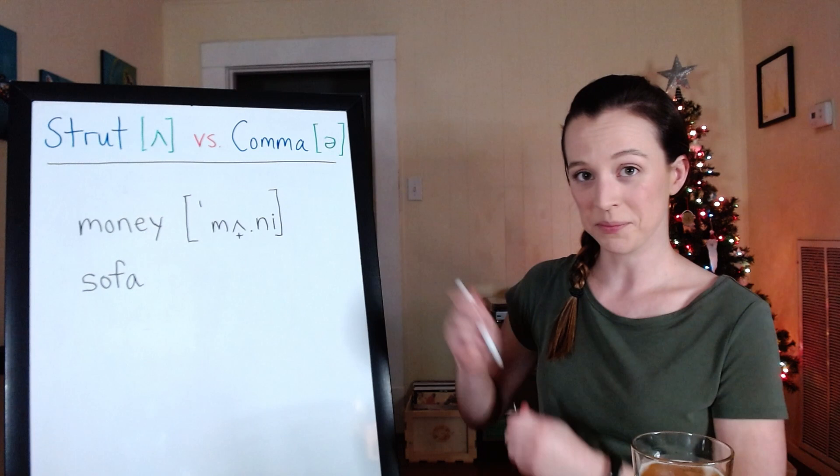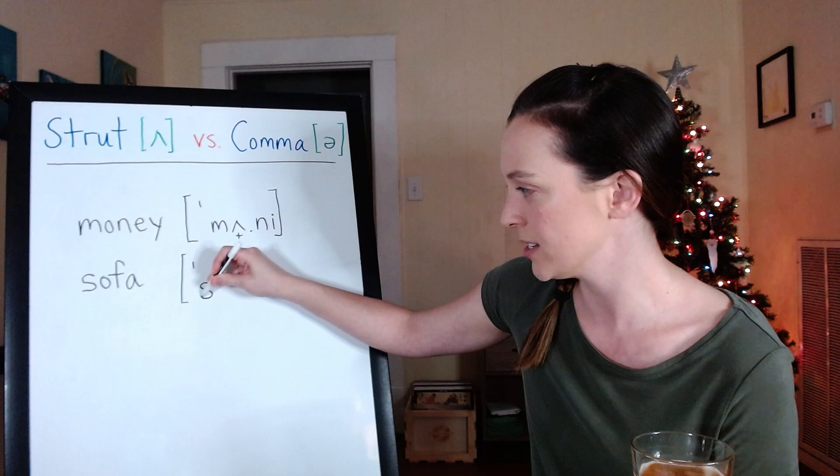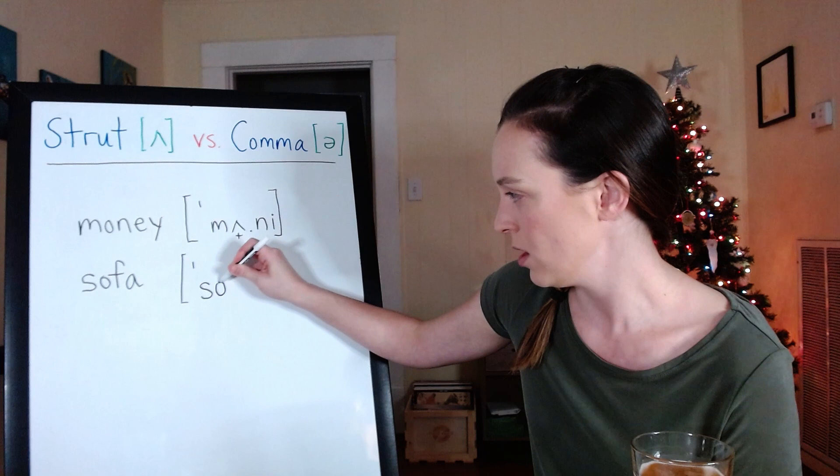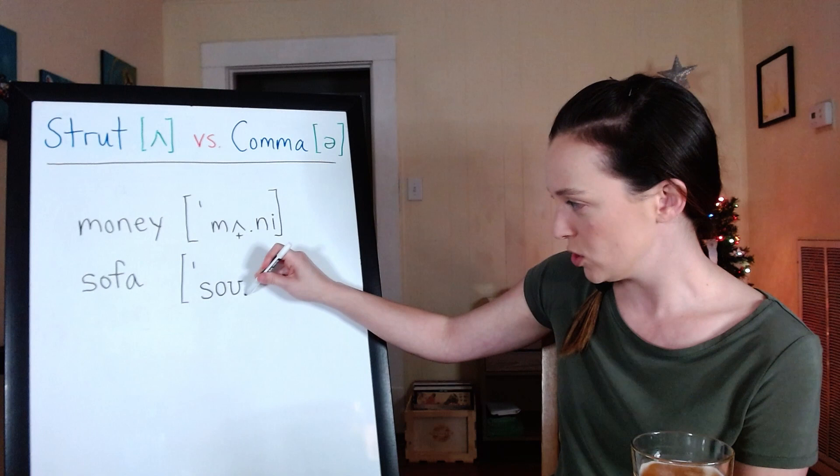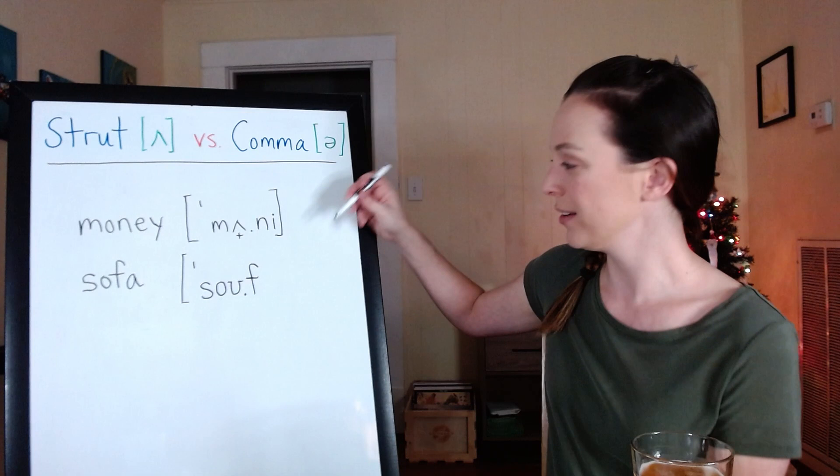So it looks like this. Again, our stress mark because the first syllable's stressed, right? Our sss, o, the o diphthong. So we've got o, syllable break, so, fff, f, uh, schwa.